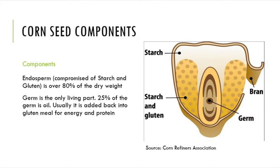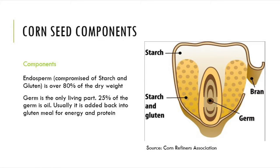As we take a look at a corn kernel, there are a few components that are extremely important to be able to identify. As you can see from this picture, most of the corn seed is starch and or corn gluten. There is very little of it that is germ. In fact, 80% of corn on a dry matter basis is the endosperm. The germ is the only living part of the corn kernel, 25% of which is corn oil. You can see exactly why corn is valued as a high energy feed — it contains a lot of starch.